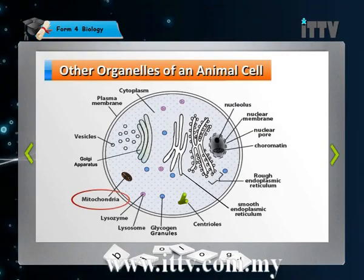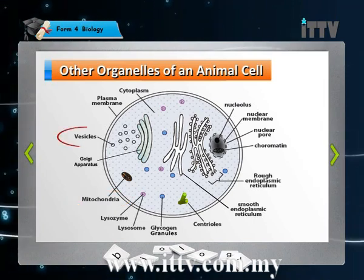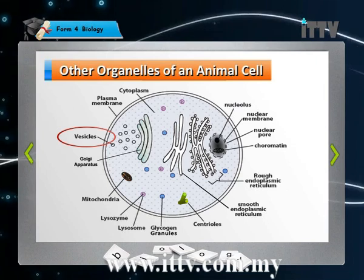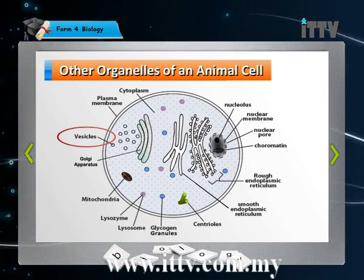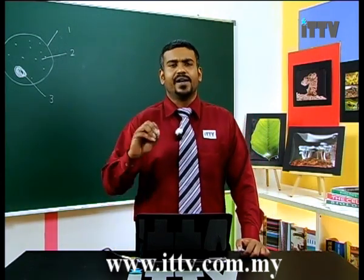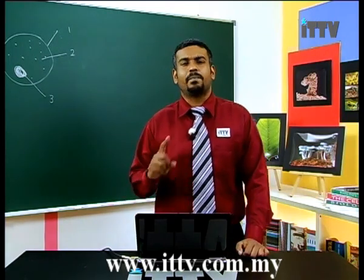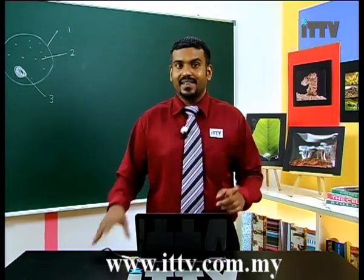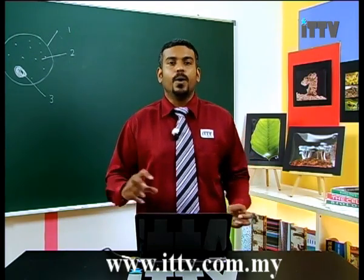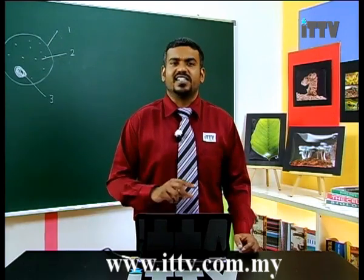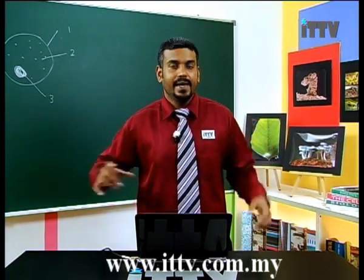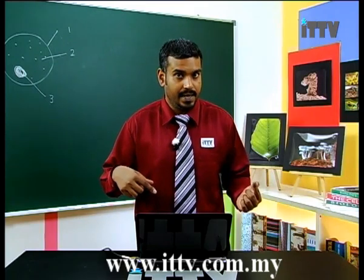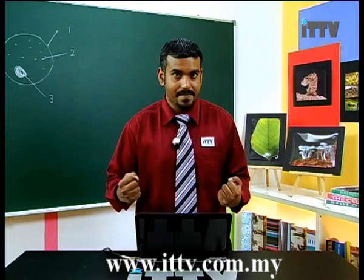The mitochondria is important to produce energy in the form of ATP. Next you have vesicles and the Golgi apparatus. The function of the Golgi apparatus is to modify and it is involved in the synthesis of protein. Regarding vesicles — both plant and animal cells have empty spaces filled with liquid. In an animal cell, we call them vesicles because they are small but numerous. In a plant cell, however, there is one large central vacuole, which is why we call it a vacuole instead of a vesicle. Both store things inside them.